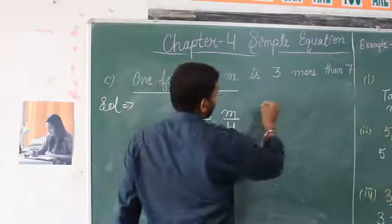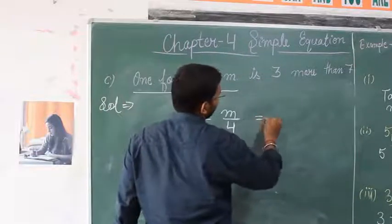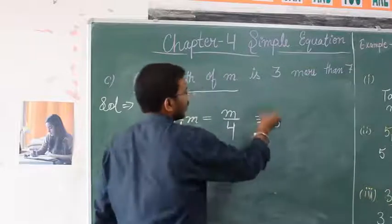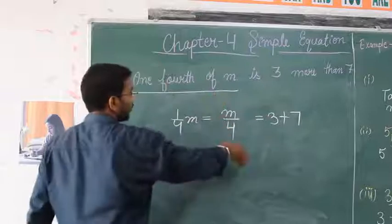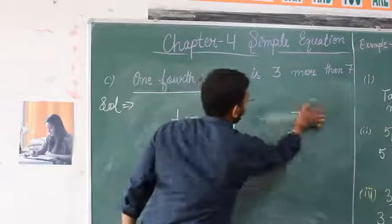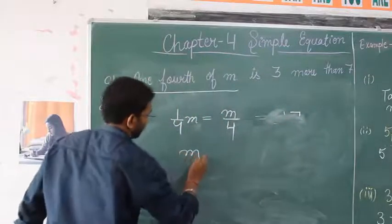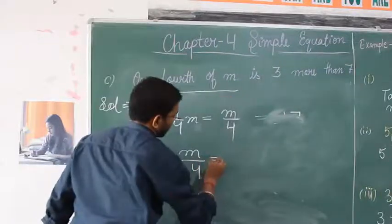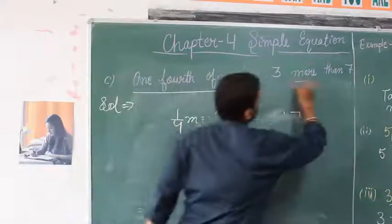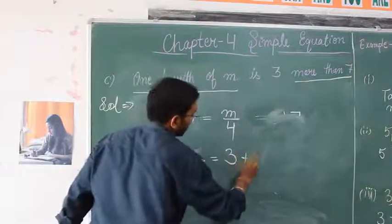It means that this will be equal to 3 more than 7. This forms the equation: m by 4 is 3 more than 7.